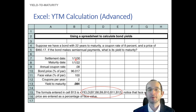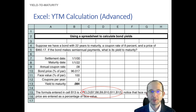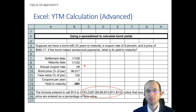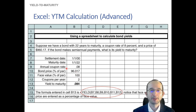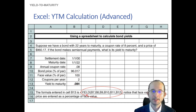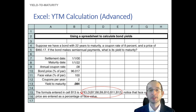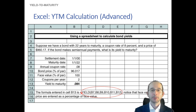That would be a quarter of the way through the first year. The YIELD function, given a settlement date and a maturity date, the annual coupon rate, the bond price as a percentage of par, the face value as a percentage of par — usually 100% of par — and the number of coupons per year, will give you the yield on this bond, even taking into account accrued interest.